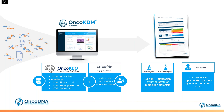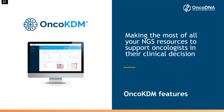In addition to all the NGS data, we have more than 1,000 biomarkers registered in our database. Before the report is delivered, there is a scientific approval step — a validation by one of our OncoDNA scientist team members. They validate the report and then share it on the interactive KDM platform. You can also download it as a PDF, edit and customize it as you wish — a point we'll highlight later in the webinar.